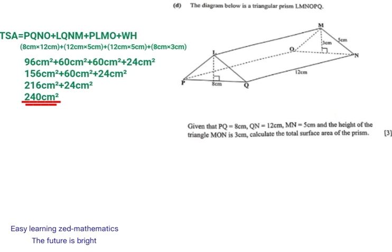So basically, this is how you find the total surface area of the triangular prism. If you have questions, you can ask in the comment section. Otherwise, thank you so much for watching. It has been Easy Learning Z Mathematics — the future is bright. See you in the next video and God bless you.